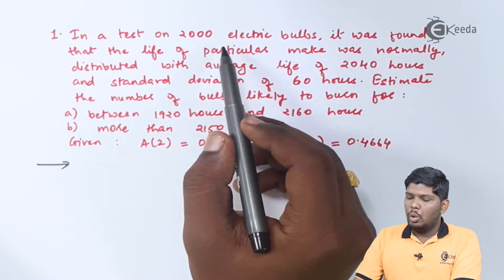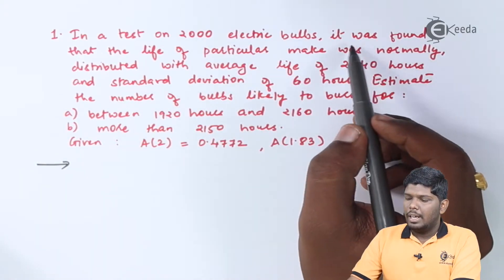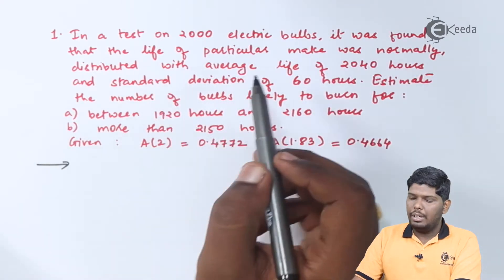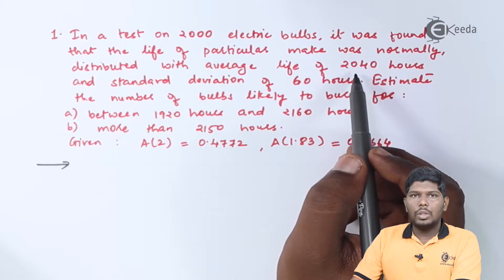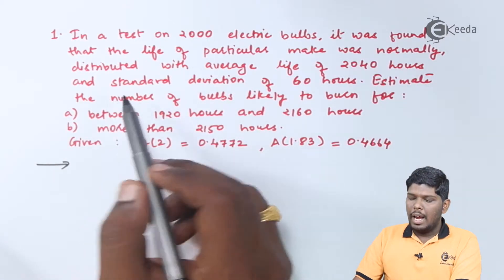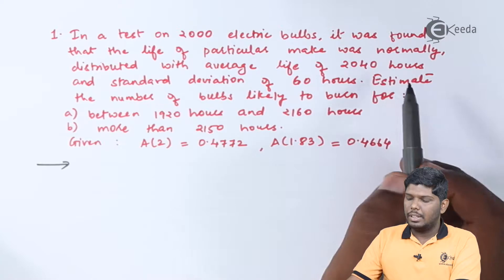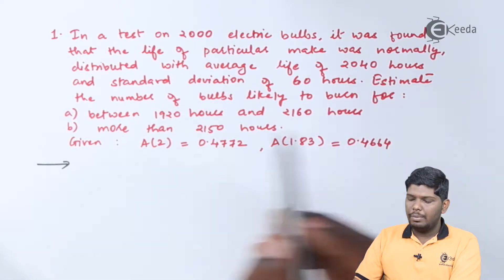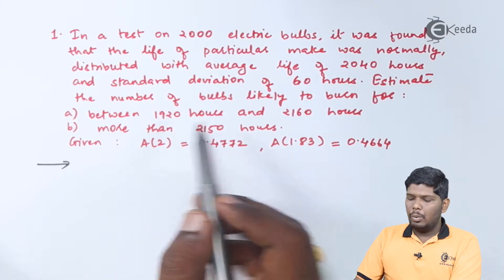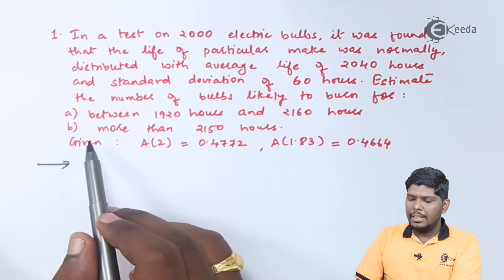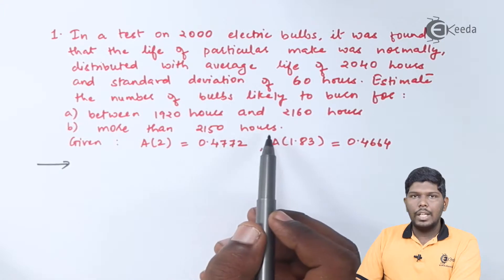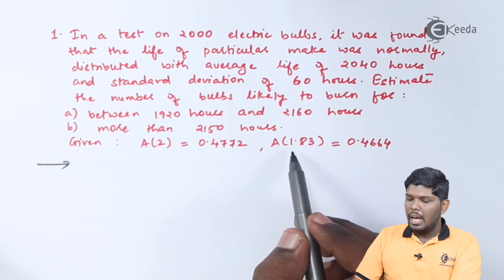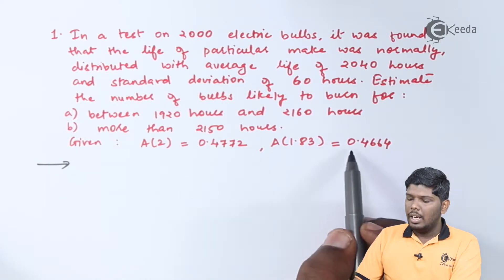In a test on 2000 electric bulbs, it was found that the life of a particular make was normally distributed with an average life of 2040 hours and standard deviation of 60 hours. Estimate the number of bulbs likely to burn for between 1920 hours to 2160 hours, and second, more than 2150 hours. Given that A(2) = 0.4772 and A(1.83) = 0.4664.